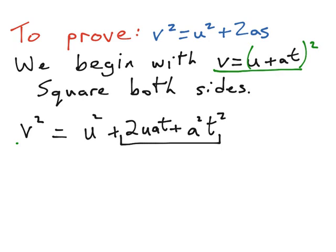if we compare where we are at the moment with where we want to finish up with, we have a v squared on the left hand side, which we have in our equation. We have an equals and then a u squared part. So the only thing that we have to manipulate is the 2uat plus a squared t squared part.